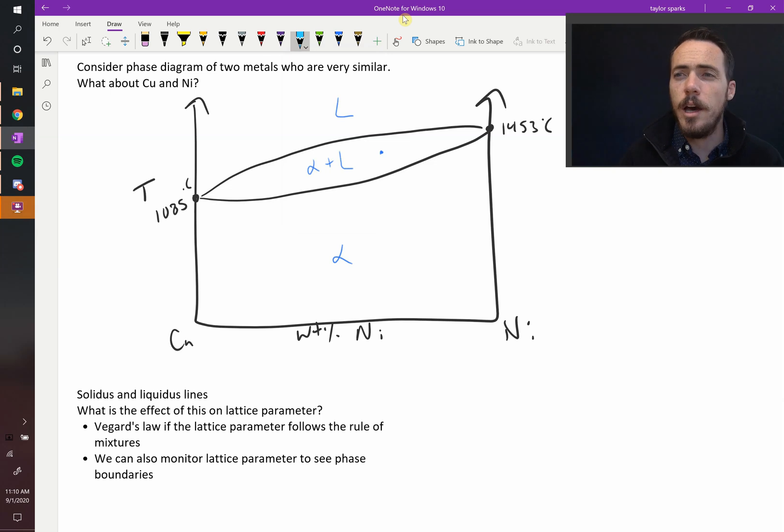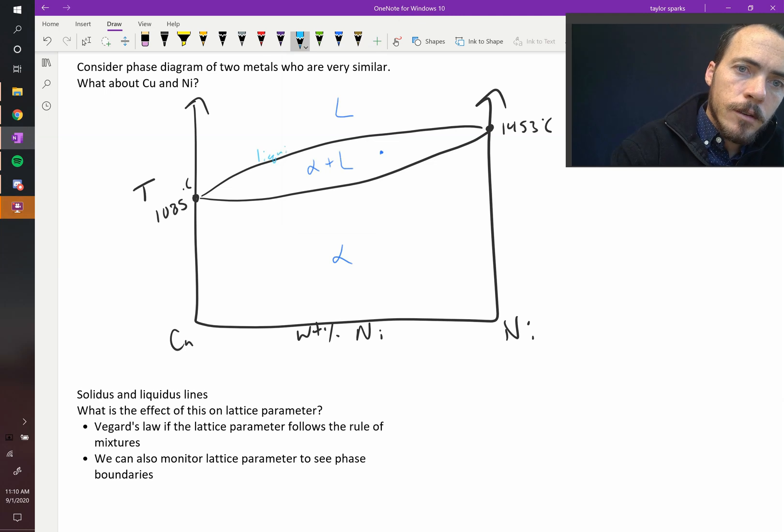All right, let's talk for a minute about the different lines that I've drawn on this phase diagram. On the top here you have what's called the liquidus line. And down here you've got the solidus line. That's this one, that's this one.